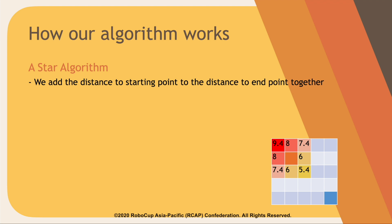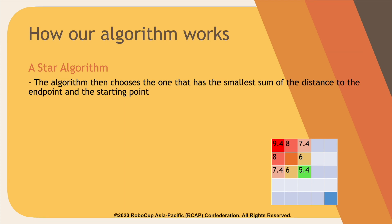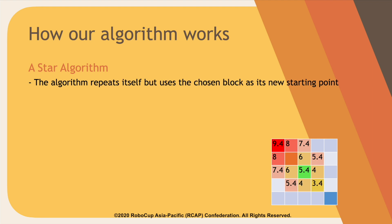This way we can calculate the shortest route to the end point. The algorithm then chooses the block that has the smallest sum of distance to the end point and the starting point, which is highlighted in green, and the algorithm repeats itself.